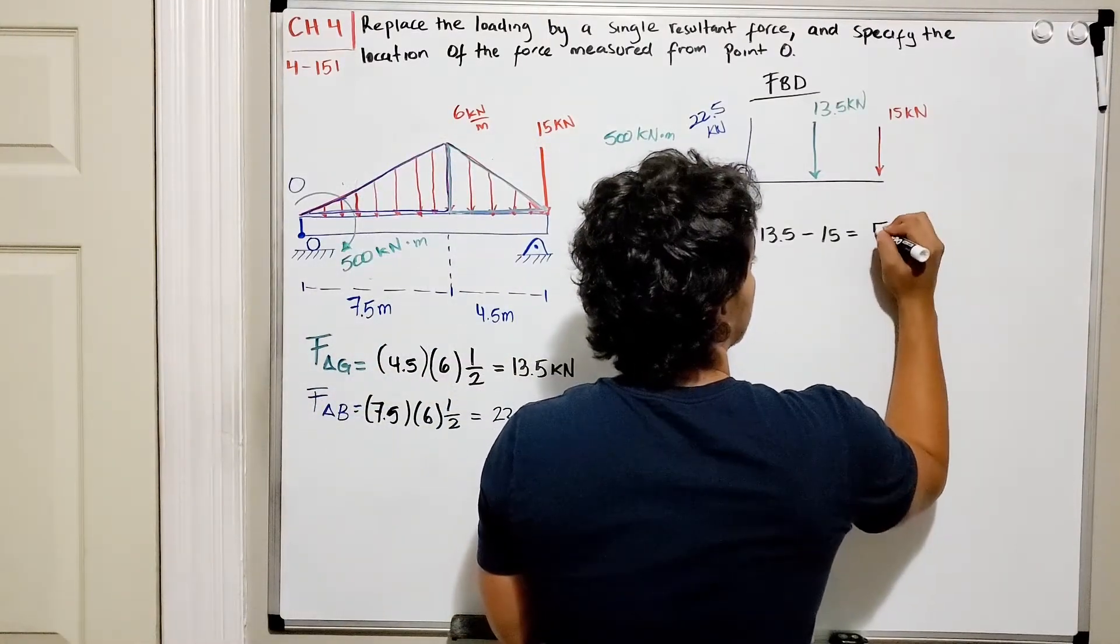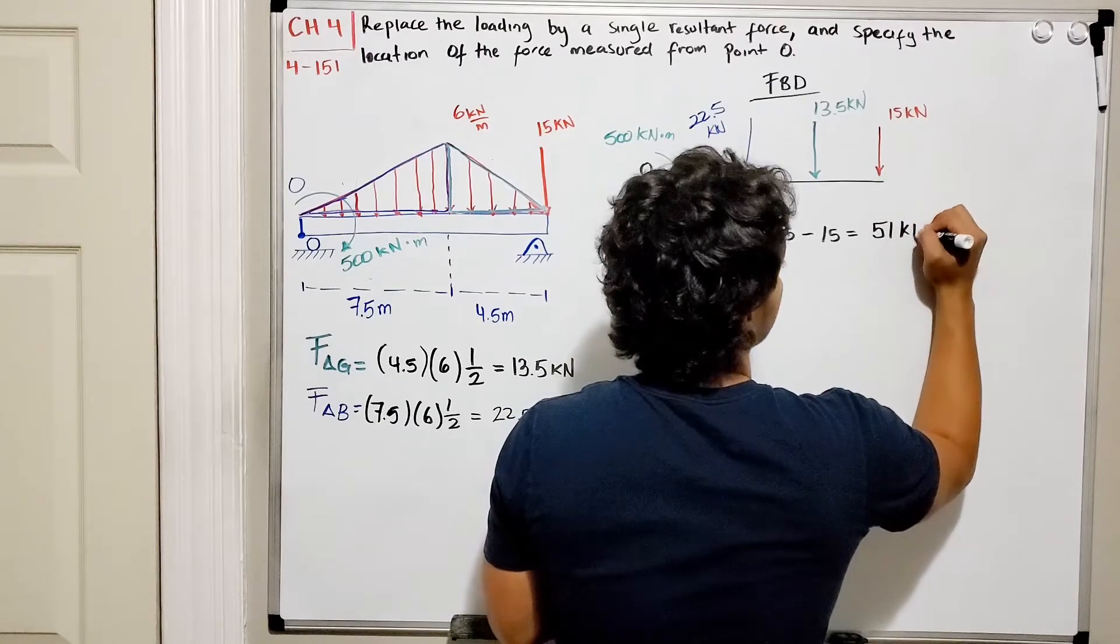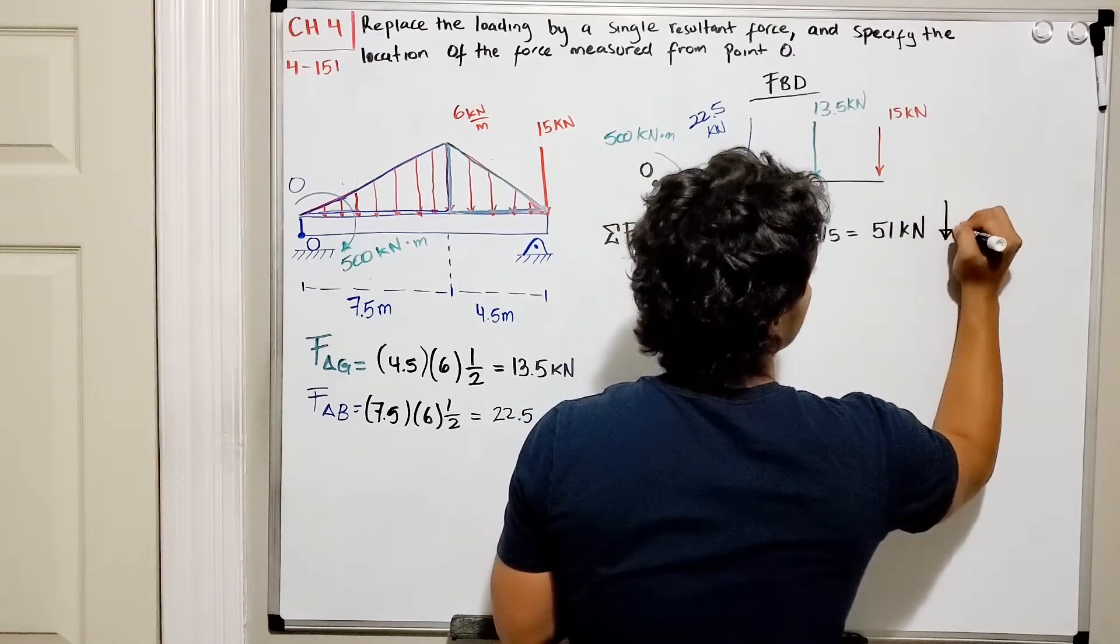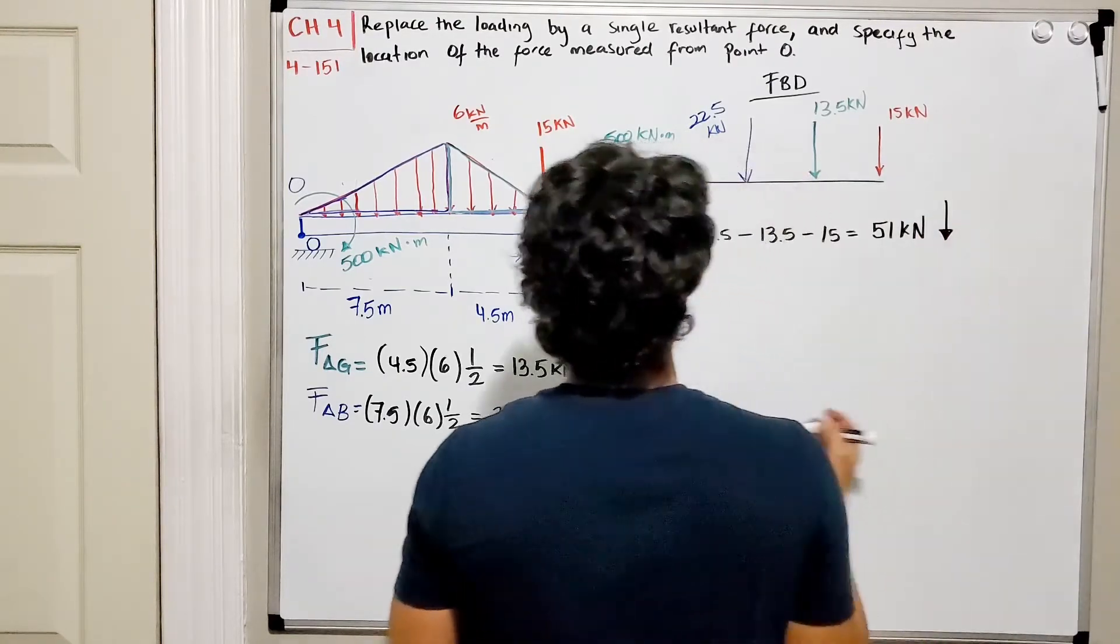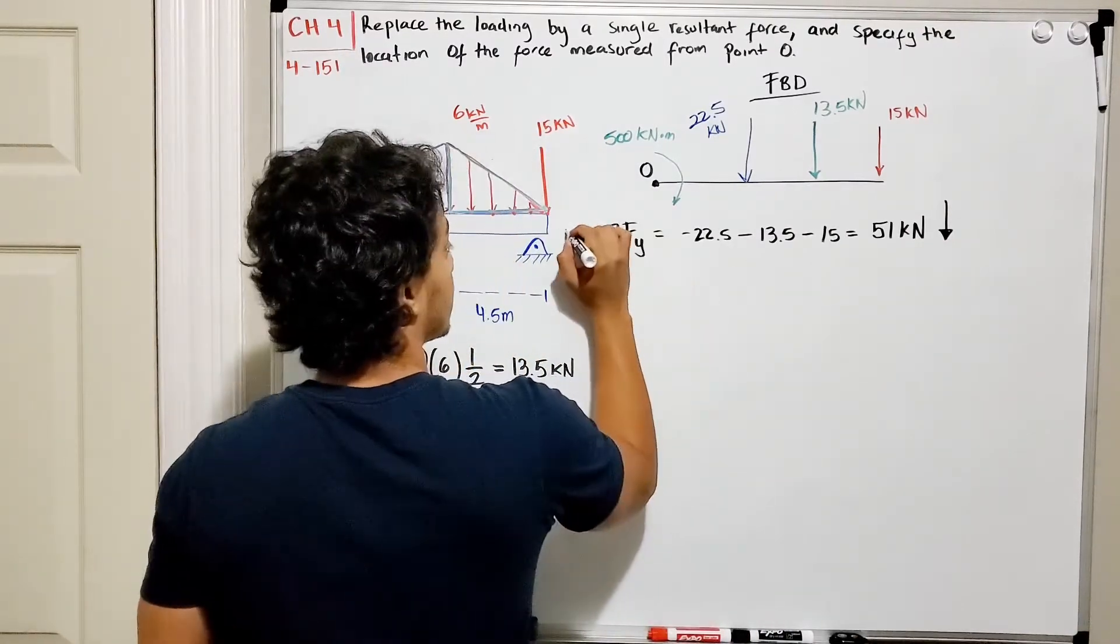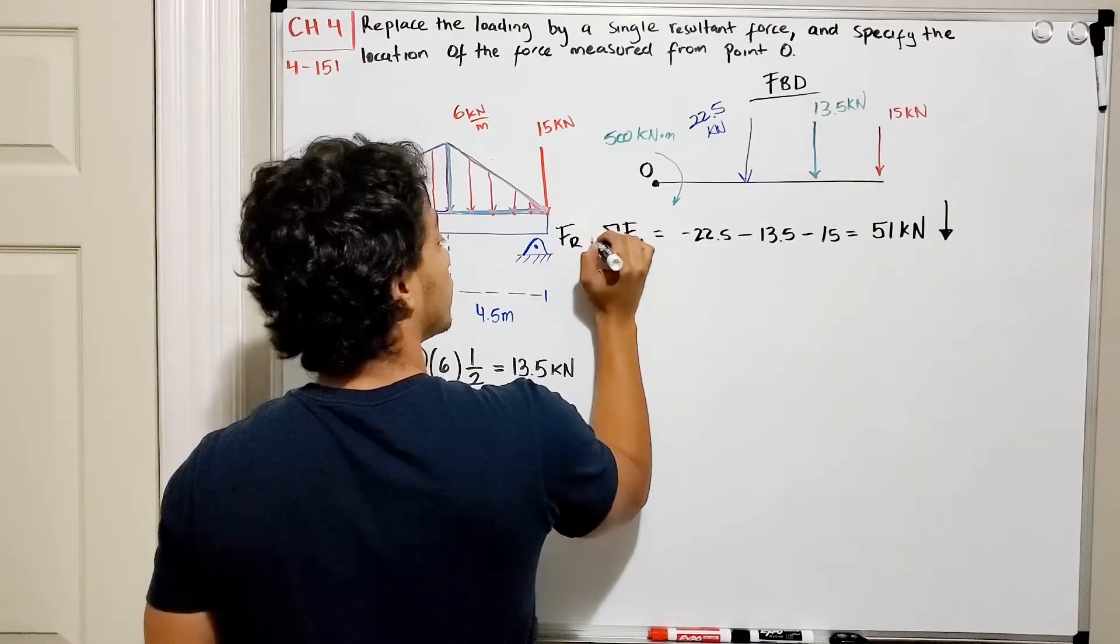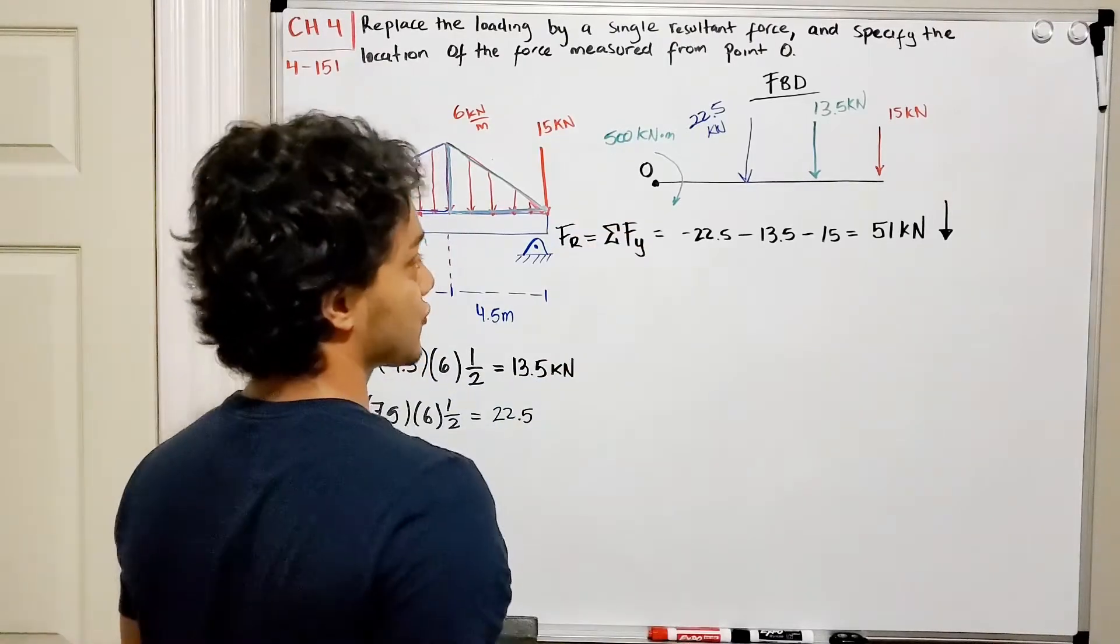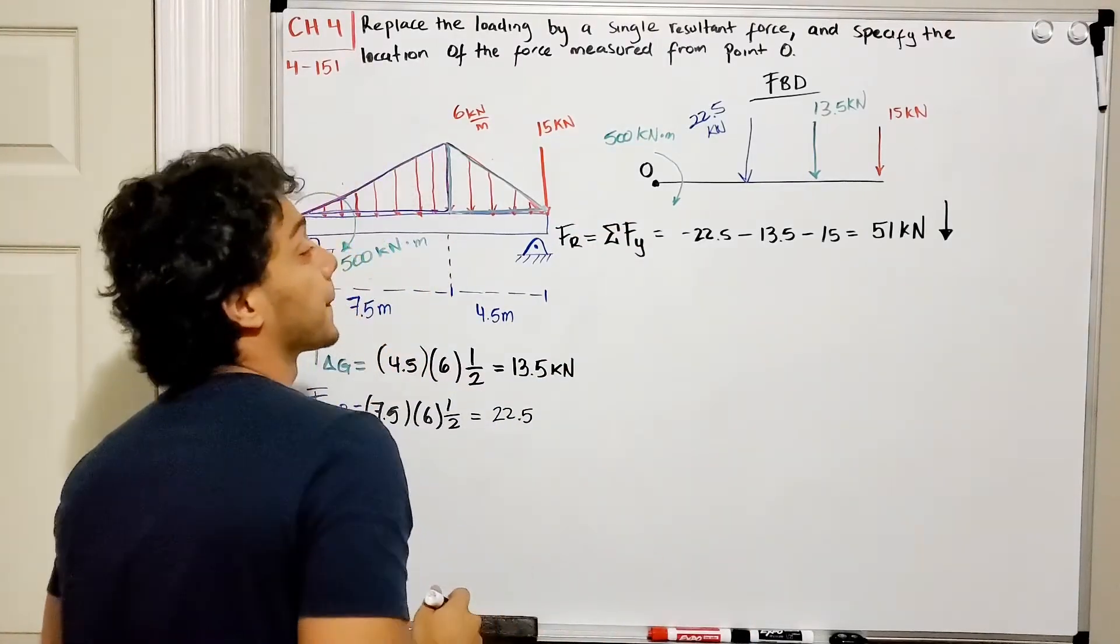So we do -22.5 - 13.5 - 15 and it's equal to -51. So we have 51 kN going down for my resultant force.